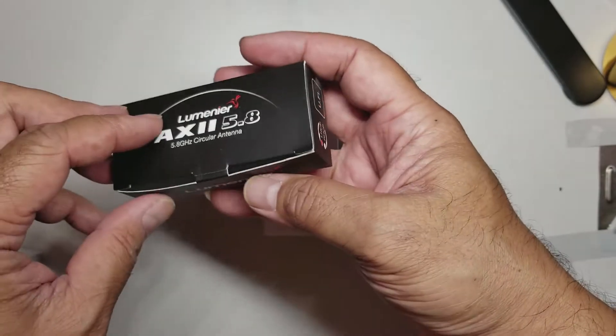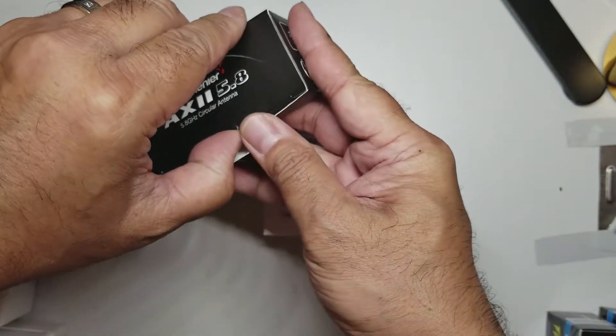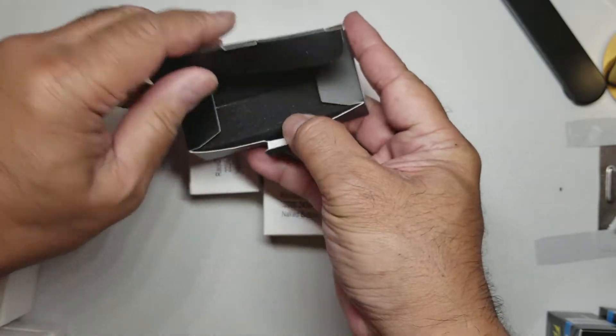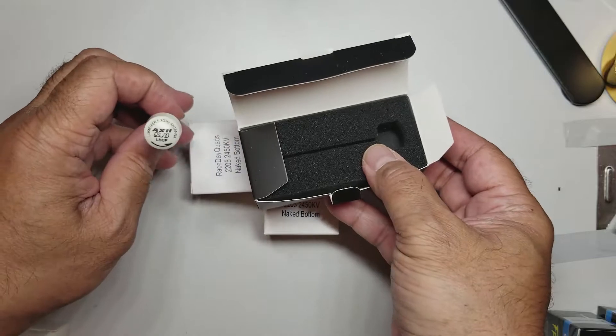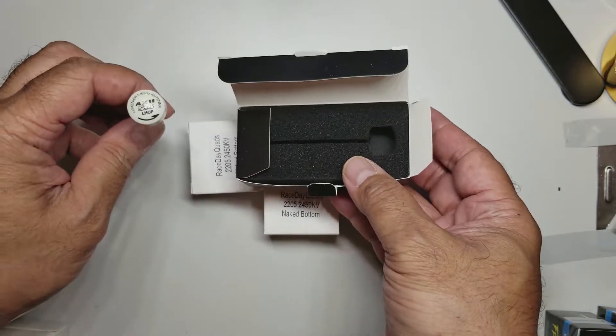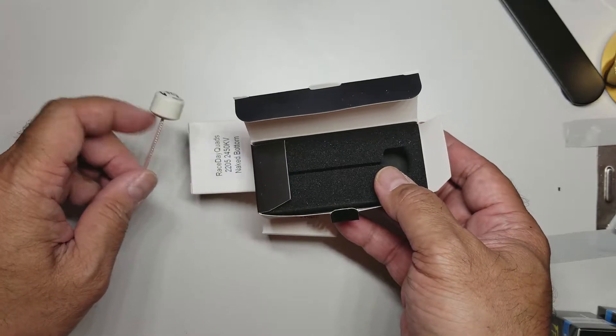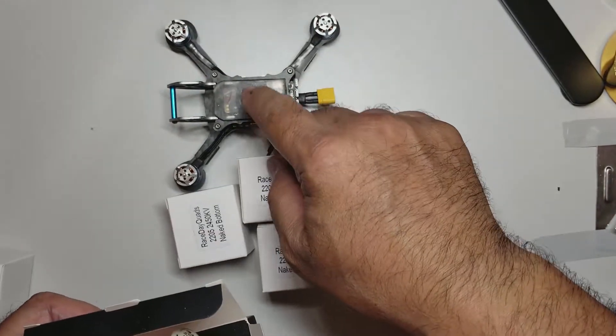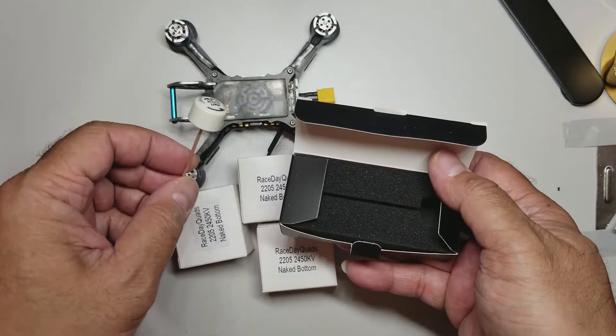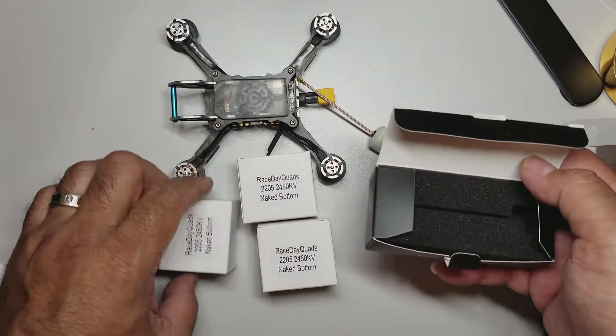Ordered up another Axii. I hope this is the white one, please be the white one. Yes! These are the LHCP, the white ones. The black ones are the RHCP. I borrowed the one that was on the Nemesis, so I had to get another one. I took the one off the Nemesis and put it on the Leader and got this one for the Nemesis.